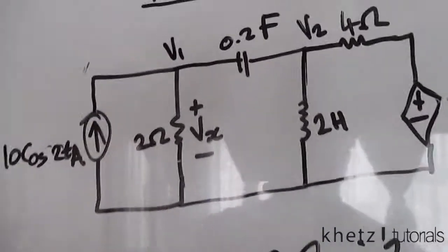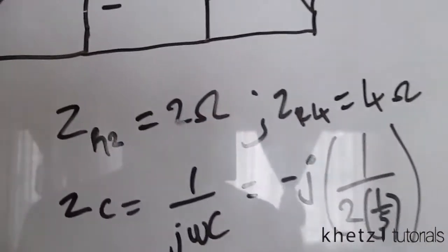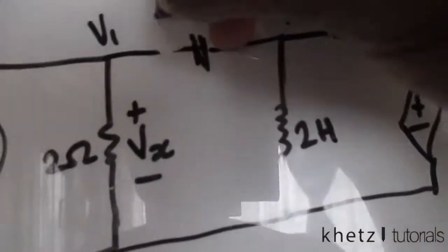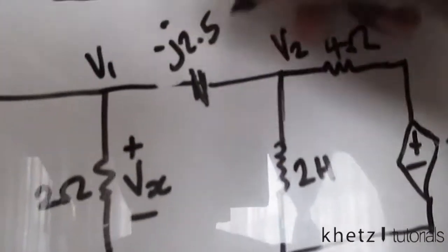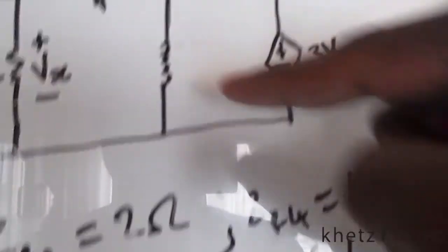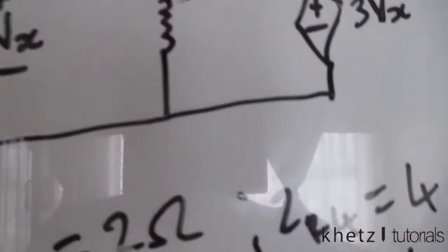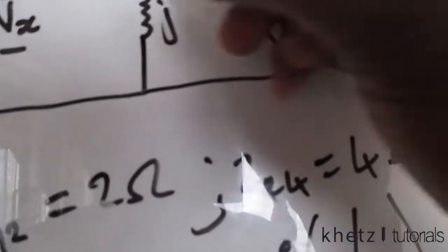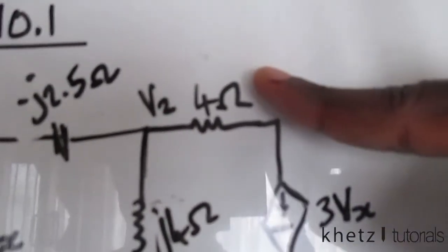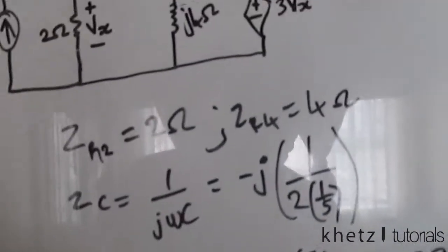We can now erase all the raw values and replace them with impedances. The capacitor becomes −j2.5 ohms, the inductor becomes j4 ohms, and the resistors stay at their same values since they already have the same units as impedance. We're now all set to perform nodal analysis.